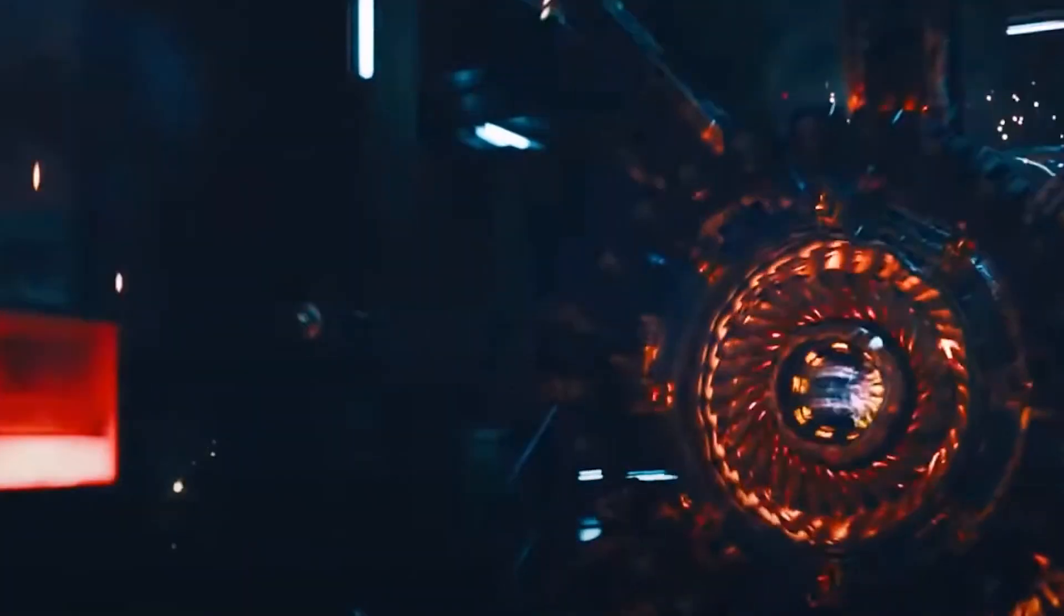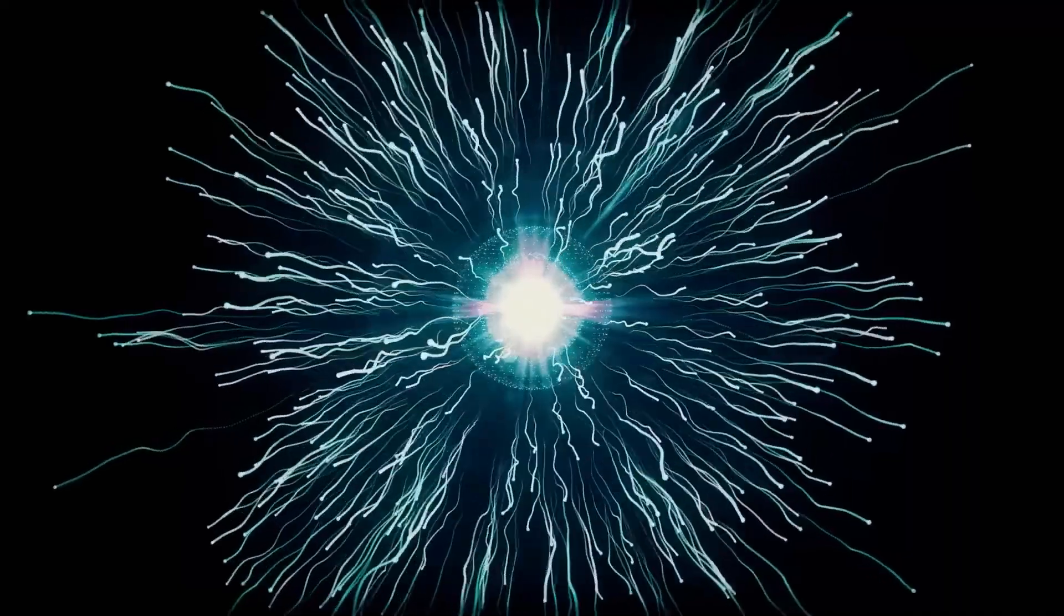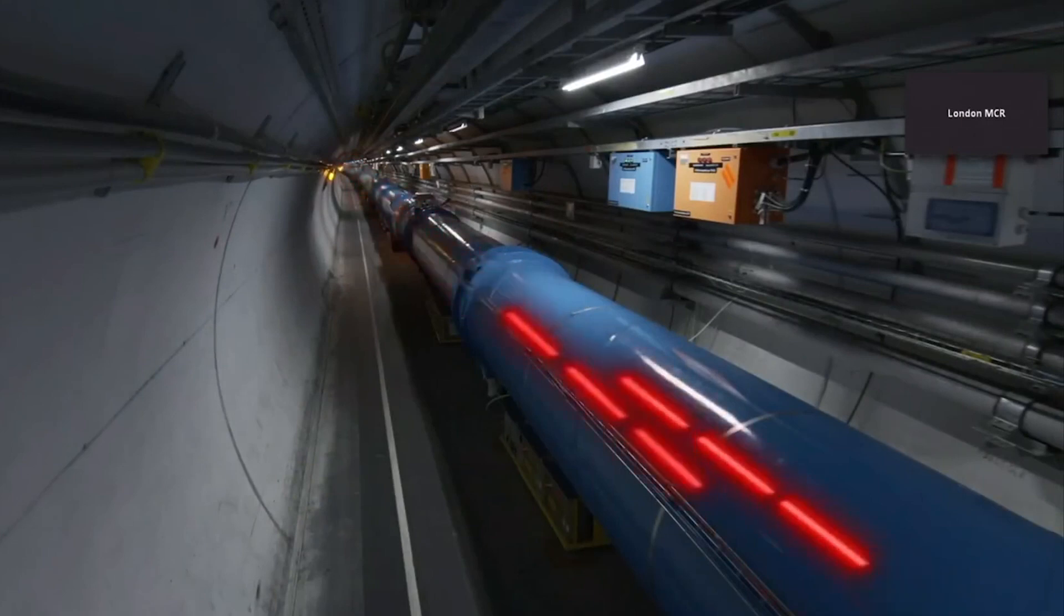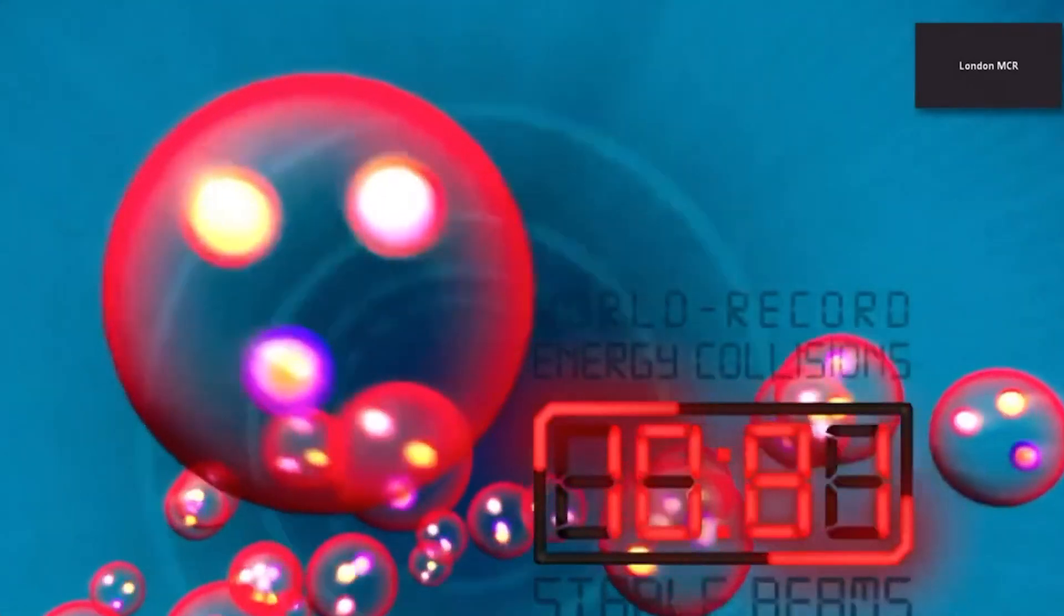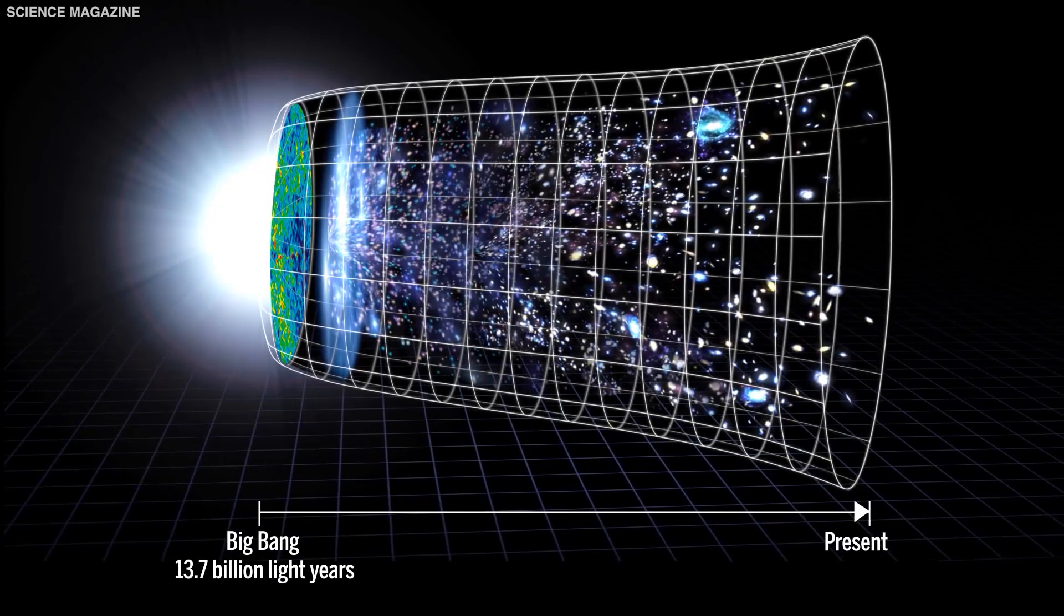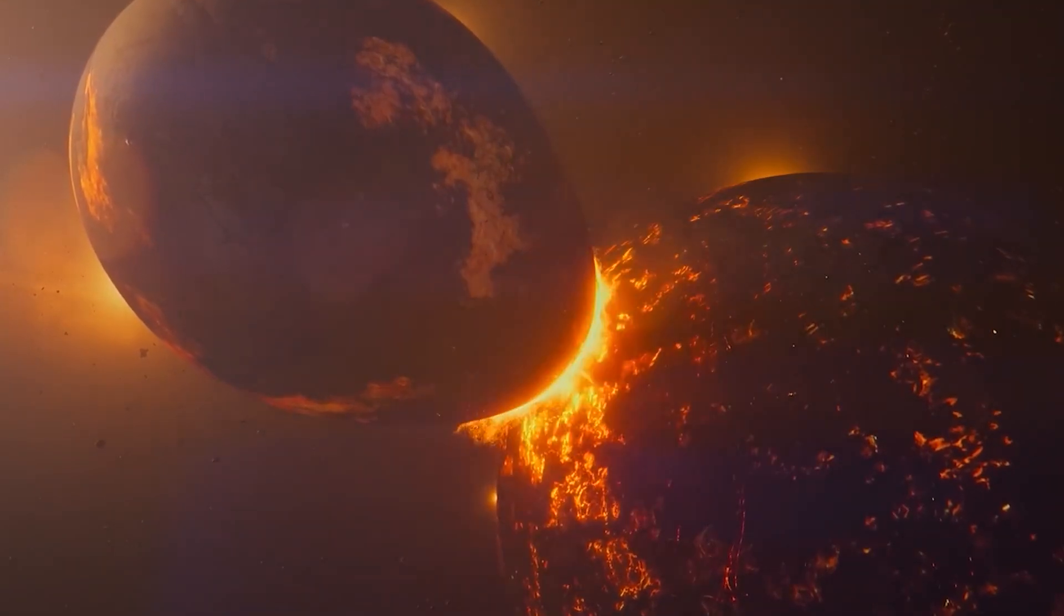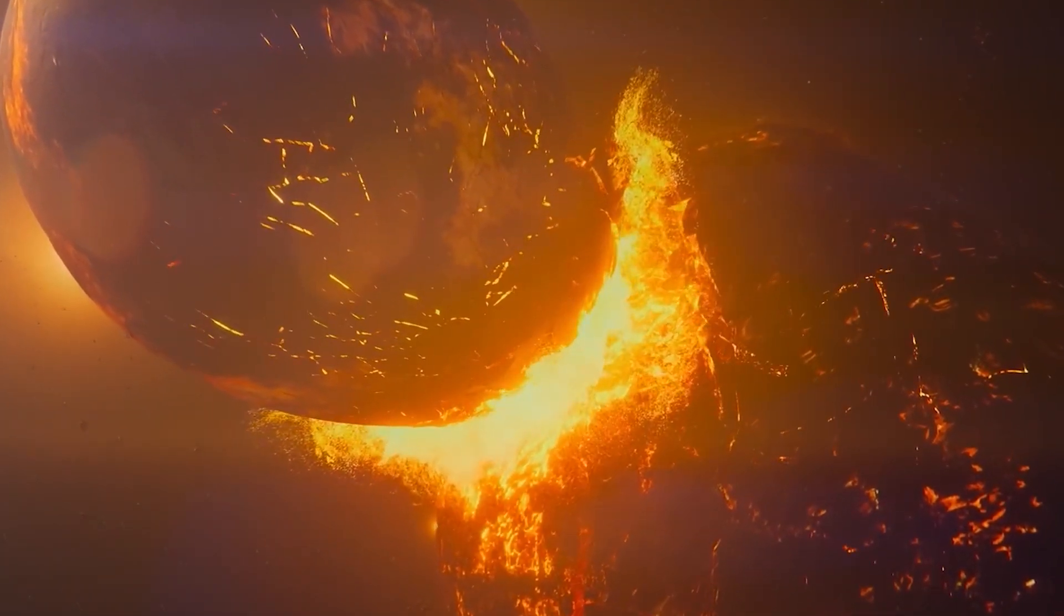However, you might wonder why such an event hasn't occurred already. The answer lies in the Higgs field, a fundamental aspect related to the concept of a false vacuum. The Higgs field would need to overcome an immense energy barrier through a process called quantum tunneling to transition to the lower energy state known as the true vacuum. This barrier is so colossal that it would likely take an astronomical amount of time, far exceeding the age of the universe, for such a transition to occur. In other words, while the collapse of the universe is a theoretical concern, it is not an immediate worry.